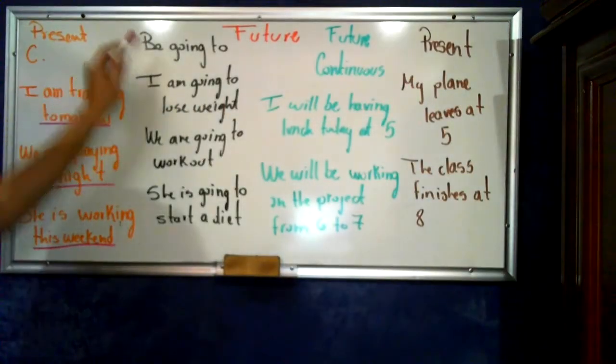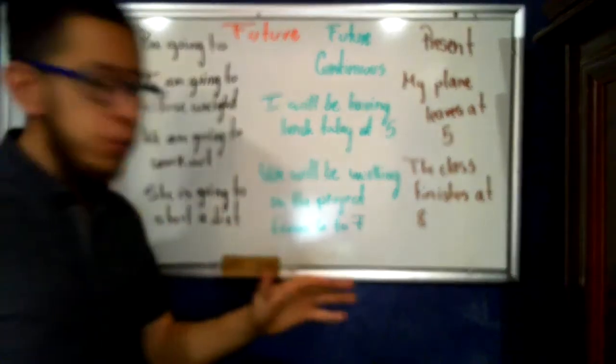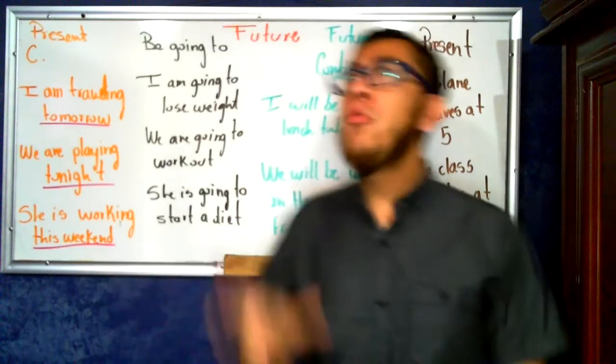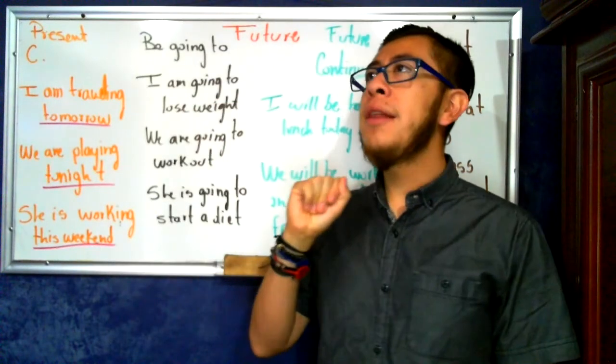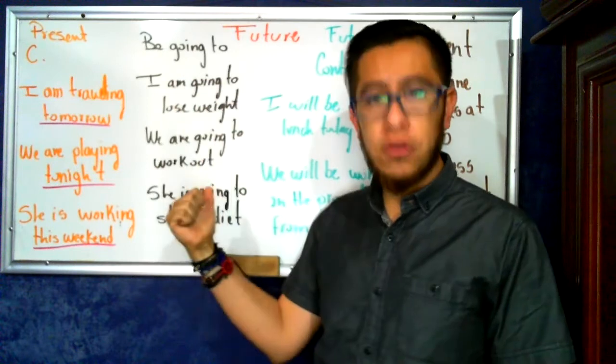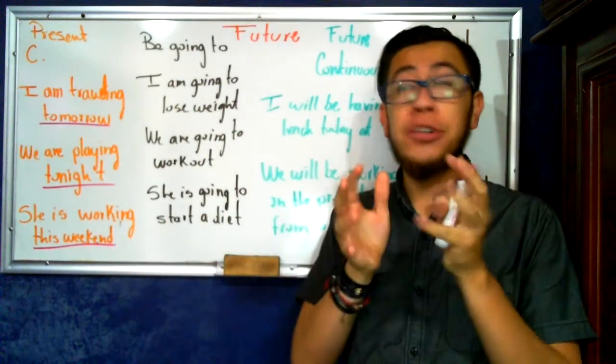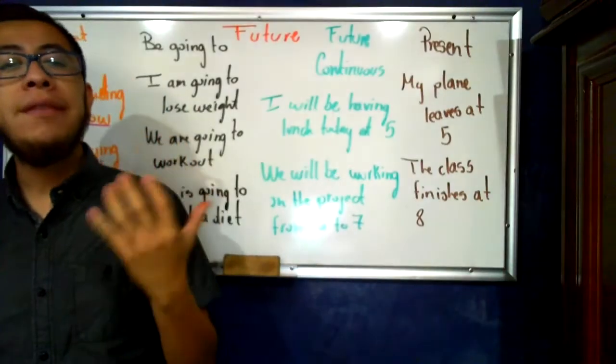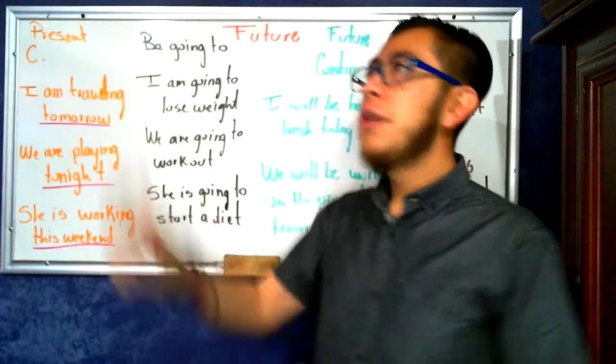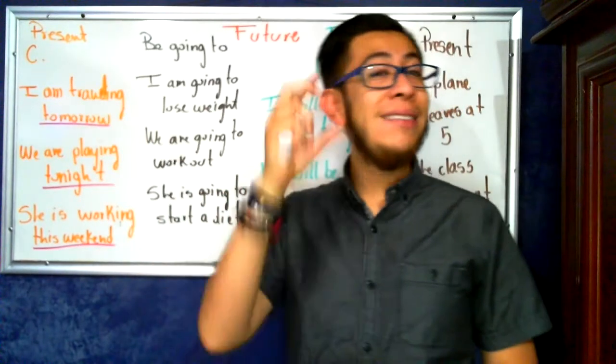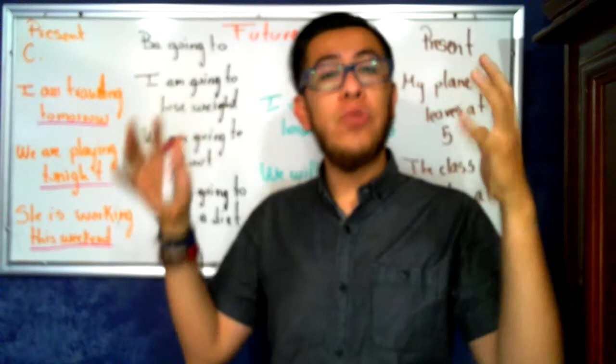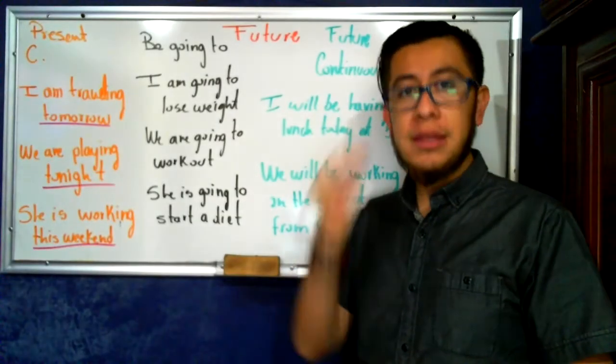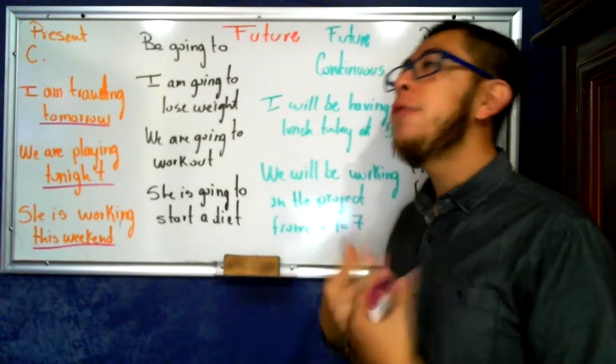Now, my second future, be going to. Everyone knows be going to. I think it's one of the most common futures we've seen. Now, many have the problem of saying, what's the difference between present continuous and be going to? It's very short. The difference is narrow. Present continuous, it's almost for sure. It's almost certain that it will happen. It's already an agreement.